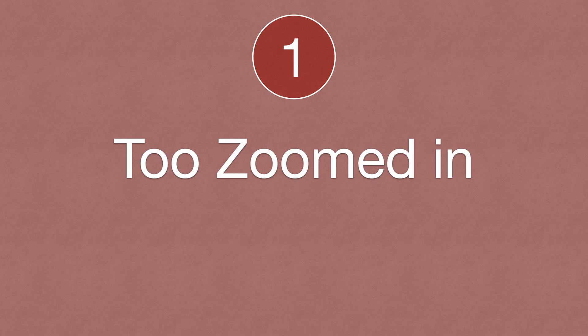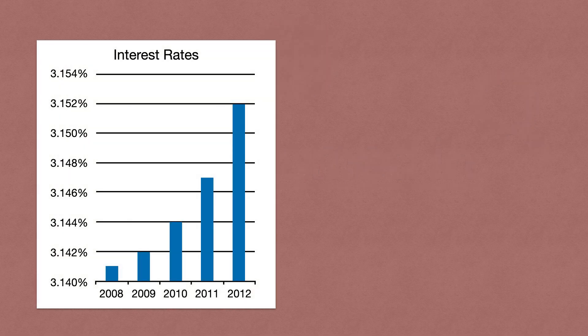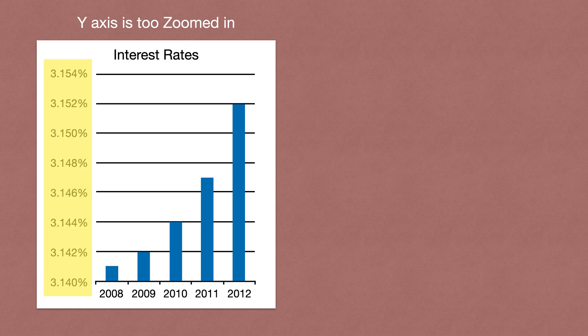Let's look at our first example, which is about when there's an axis that is too zoomed in. This is probably the most common way that people use misleading graphs and charts. Look at this chart — we're looking at interest rates from 2008 to 2012, and the y-axis is too zoomed in, only going up by 0.002%.